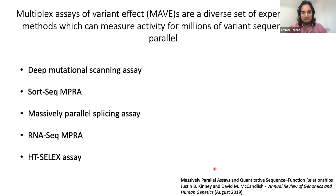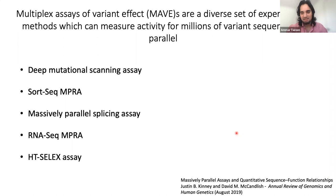I've listed some popular MAVE methods to showcase this diversity, including deep mutational scanning, RNA-seq, SORT-seq, and MPRAs. When I say phenotype, I mean a molecular phenotype — like Gibbs free energy of binding, or gene expression — but not something like human height. Underlying all MAVEs is the idea that they want to probe these genotype-phenotype maps in great detail. Today I'll be focusing on three types of MAVEs shown in the box.